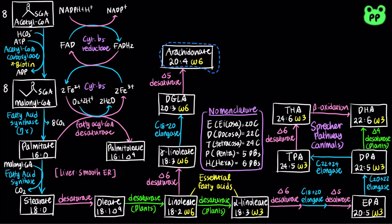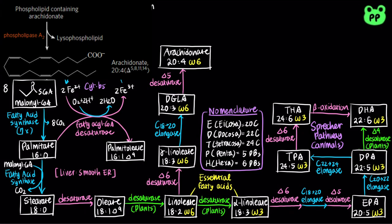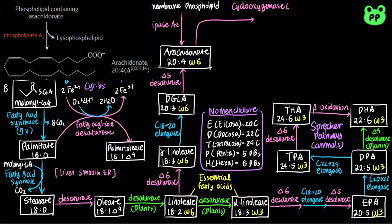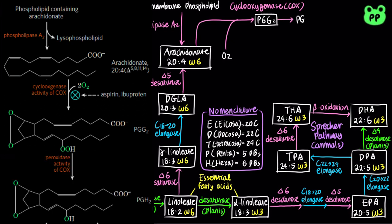So far I've covered the biosynthesis of several major polyunsaturated fatty acids. In the last part of the video, I'm going to cover eicosanoid biosynthesis. Eicosanoids are a family of very potent biological signaling molecules that act as local regulators. Certain stimuli can trigger phospholipase A2 to attack membrane phospholipid, releasing arachidonate from the middle carbon of glycerol. The enzyme cyclooxygenase, abbreviated as COX, can convert arachidonate to prostaglandin H2, abbreviated as PGH2, in two steps. First, cyclooxygenase activity introduces molecular oxygen to convert arachidonate to prostaglandin G2. Next, the peroxidase activity of COX converts prostaglandin G2 to prostaglandin H2.